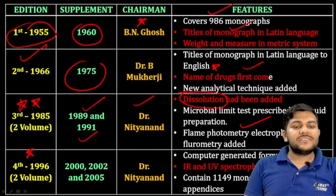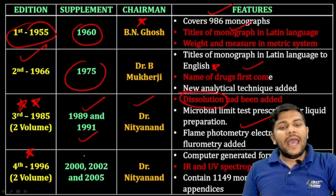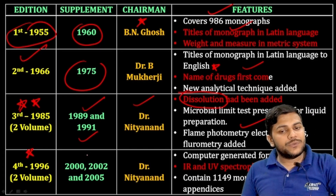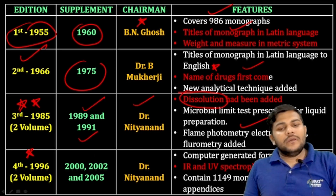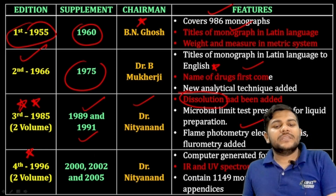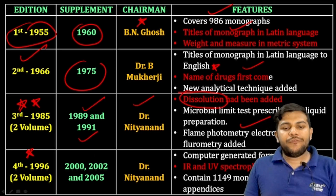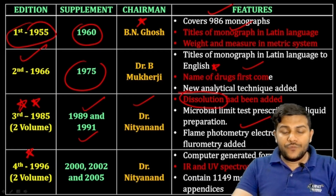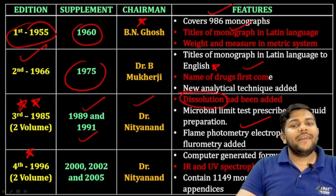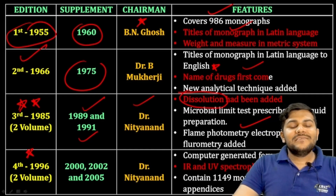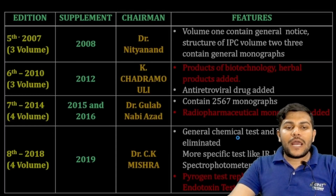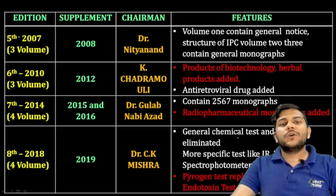The fourth pharmacopoeia was published in 1996, also having two volumes, with supplements in 2000, 2002, and 2005. Dr. Nithyanand continued as chairman. IR and UV spectroscopy tests were added in this fourth edition.